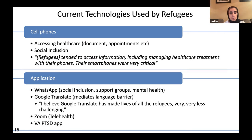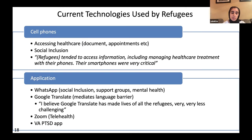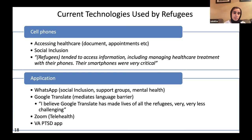Cell phones and applications were the two biggest categories. Cell phones allowed for accessing healthcare, managing documents, making appointments, and social inclusion. Applications such as WhatsApp were seen as helping with social inclusion, support groups, and mental health. Google Translate was seen as one of the best mediators for the language barrier, though many participants wanted to see it enhanced. Zoom was seen as a great platform for telehealth. The VA's PTSD app was also highlighted as a great resource — if available in different languages, participants felt it could help bridge the challenges of mental health stigma.